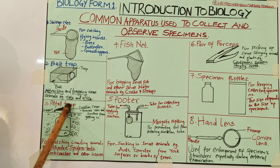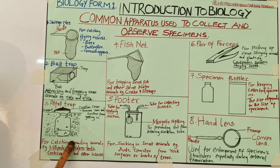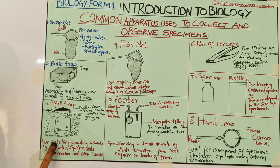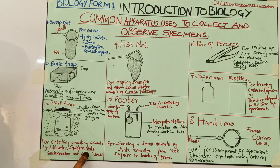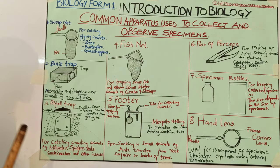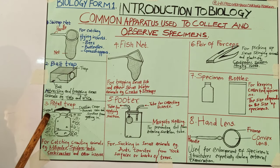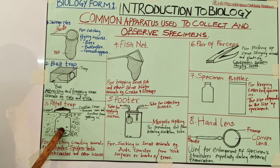The function of the pitfall trap is for catching crawling animals, for example spiders, ants, cockroaches and other insects — specimens that crawl on the ground. They are assumed to crawl and accidentally enter into this pitfall trap.